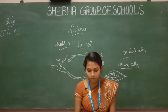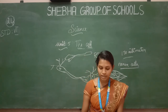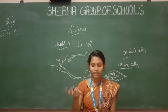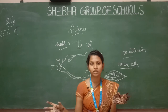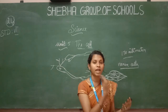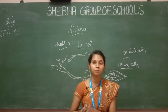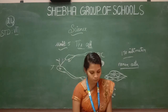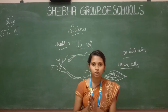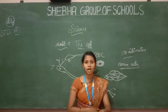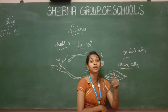This lesson covered the classification of cells — two types: prokaryotic and eukaryotic. Prokaryotic have no true nucleus; examples are bacteria and cyanobacteria. Eukaryotic include plant cells and animal cells. Structural organization, cell size ranging from 0.01 micrometer (bacteria) to 170 mm (ostrich egg), and the largest cell being the nerve cell in the human body were all discussed.